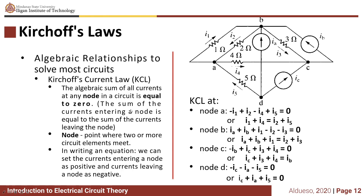First we have Kirchhoff's Current Law, or KCL. Kirchhoff's Current Law states that the algebraic sum of all currents at any node in a circuit is equal to zero. So the sum of the currents entering a node is equal to the sum of the currents leaving the node.